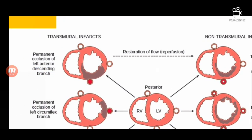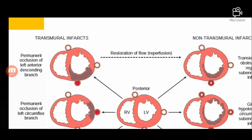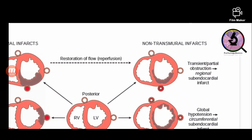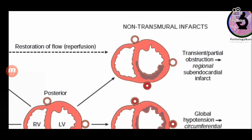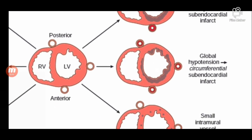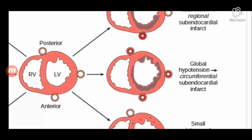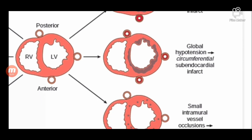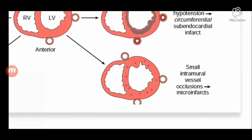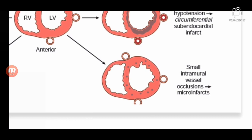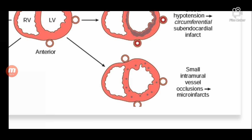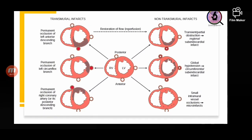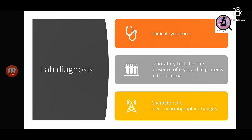In case of LAD involvement, if reperfusion is achieved through various measures, most of the myocardium can be salvaged and a subendocardial infarct may remain. Global hypotension produces a global subendocardial infarct because all arteries are somewhat narrowed but not completely obstructed. Small emboli obstructing tiny branch arteries — not the main coronary arteries — produce small microinfarcts.